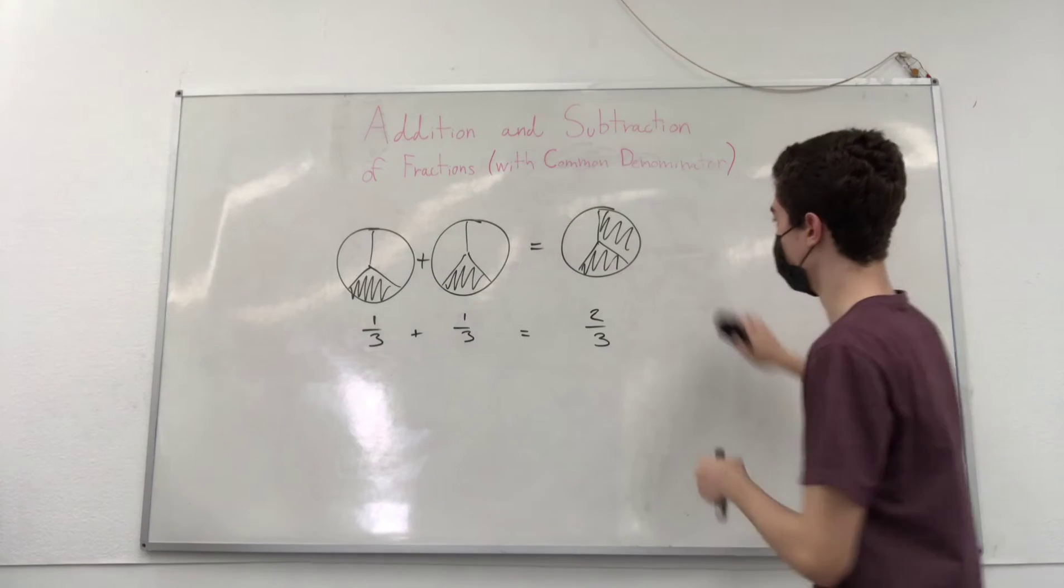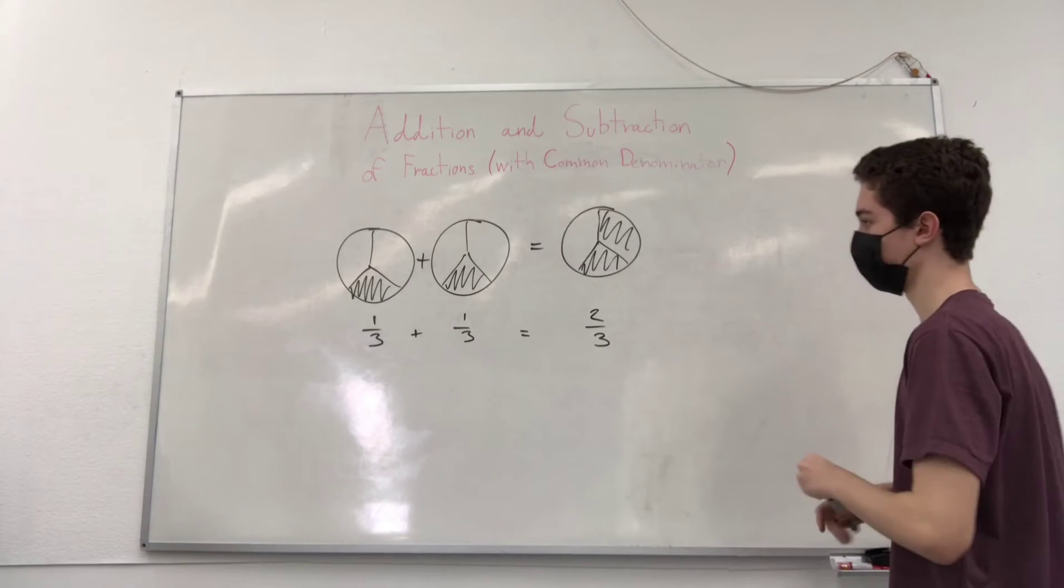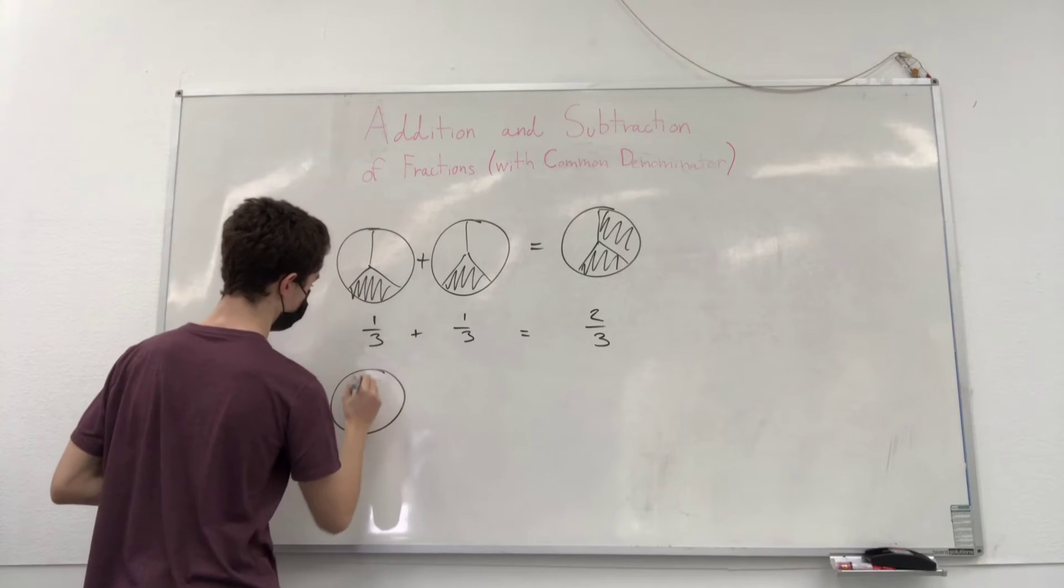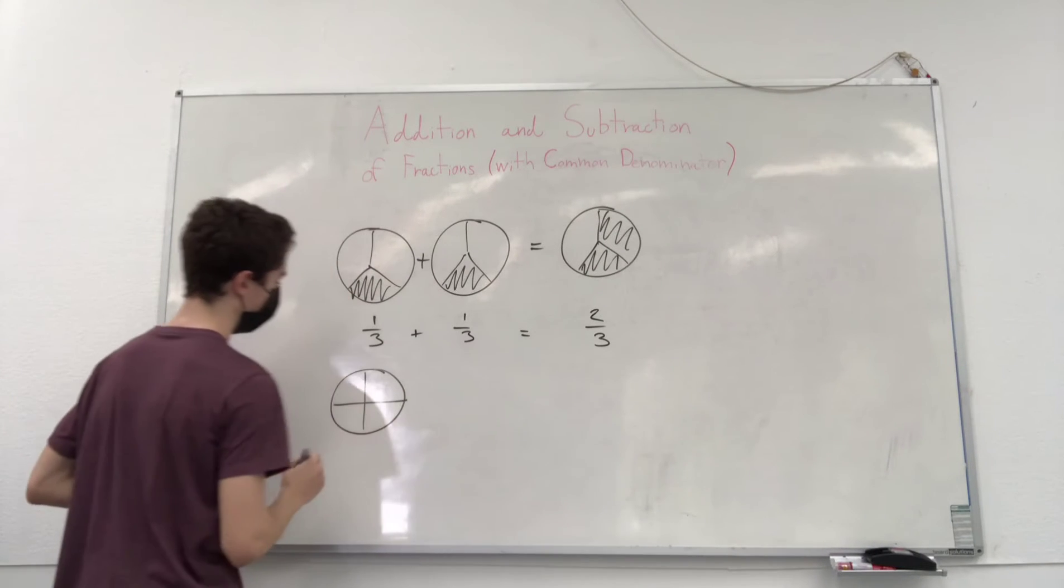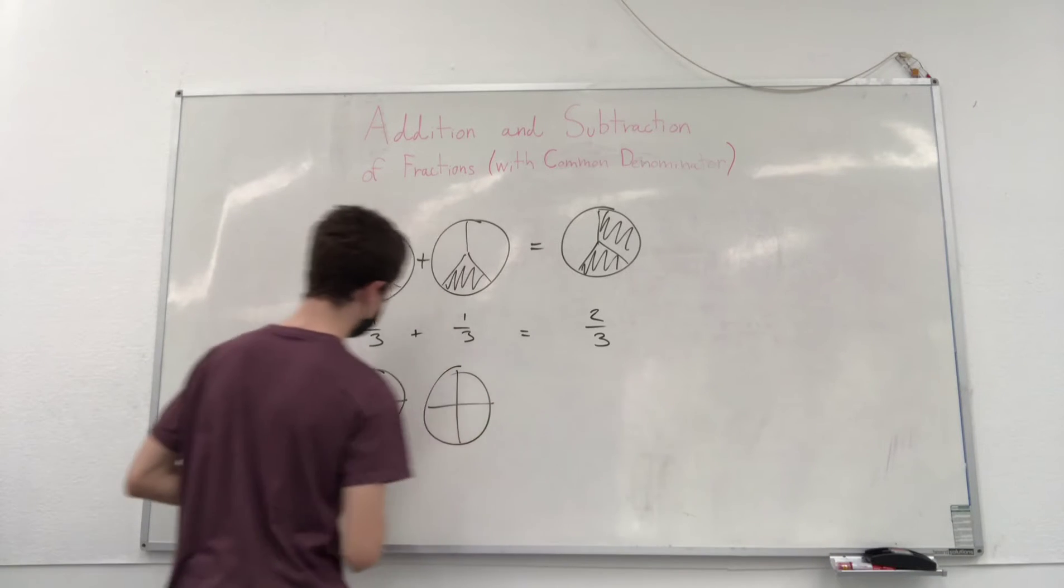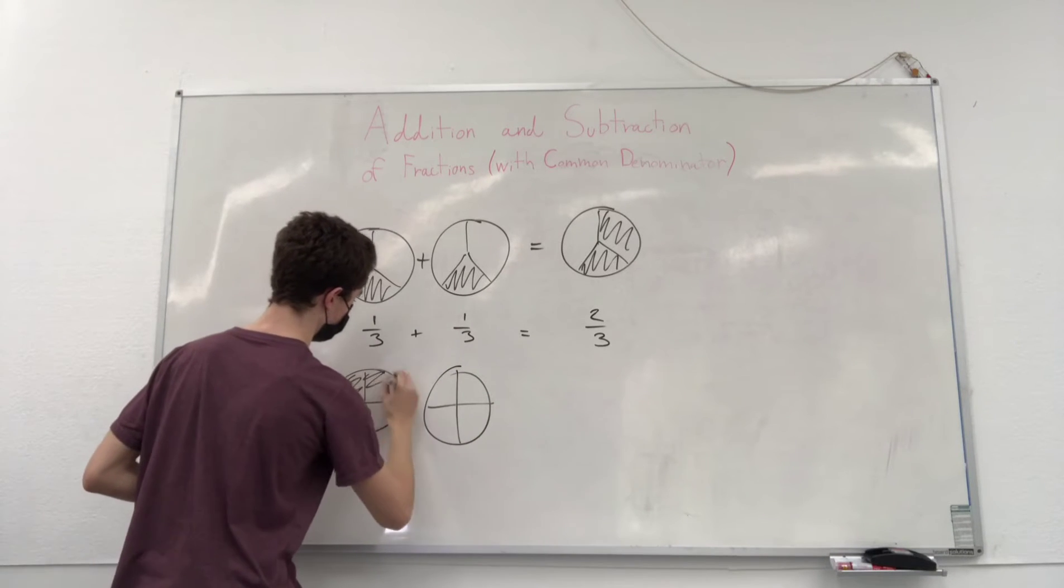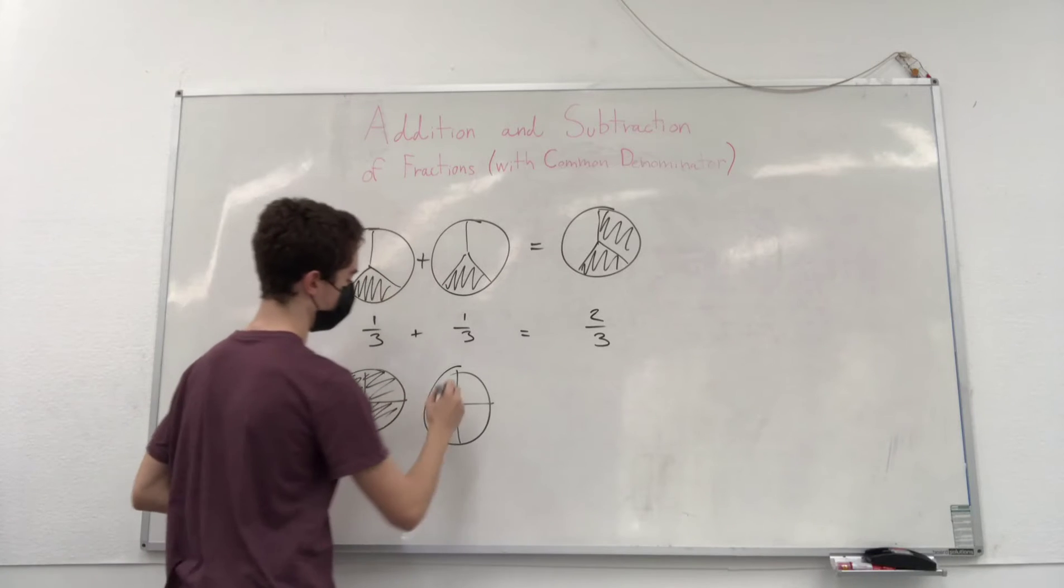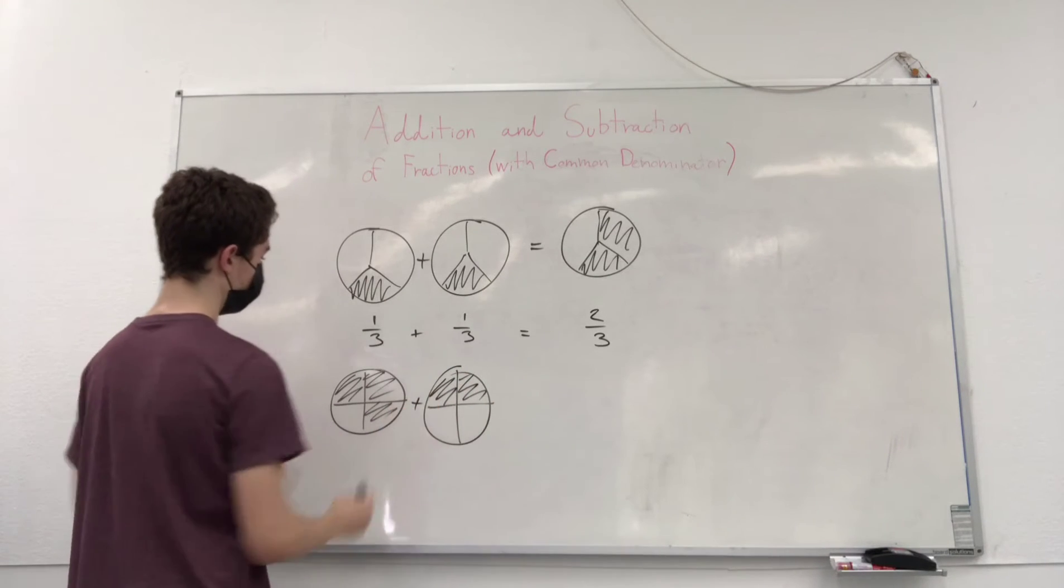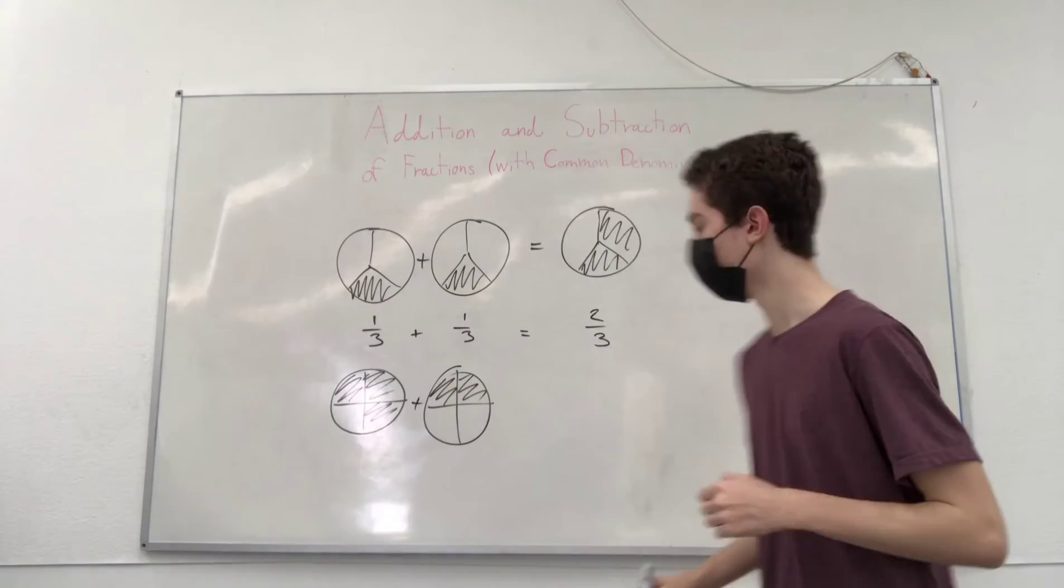All right. So now we have another example. I'm just going to do in the bottom here. What if we have a pizza that is split into four parts, and another pizza is split into four parts. And you take three parts of this pizza, and you want to add them to two parts of this pizza. And these three parts plus these two parts, what would you get?